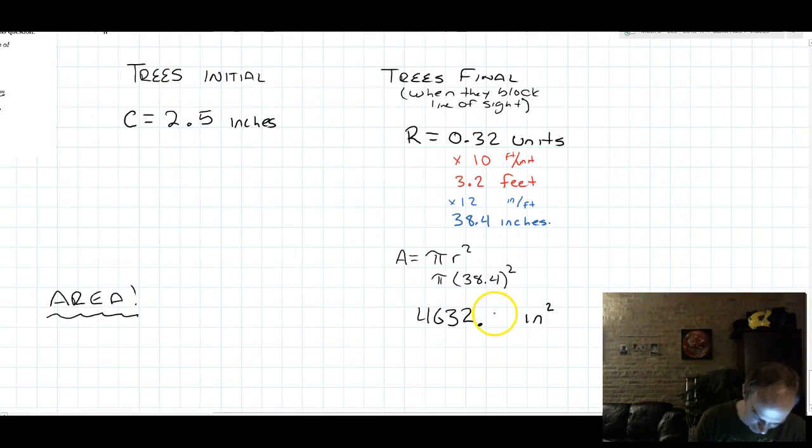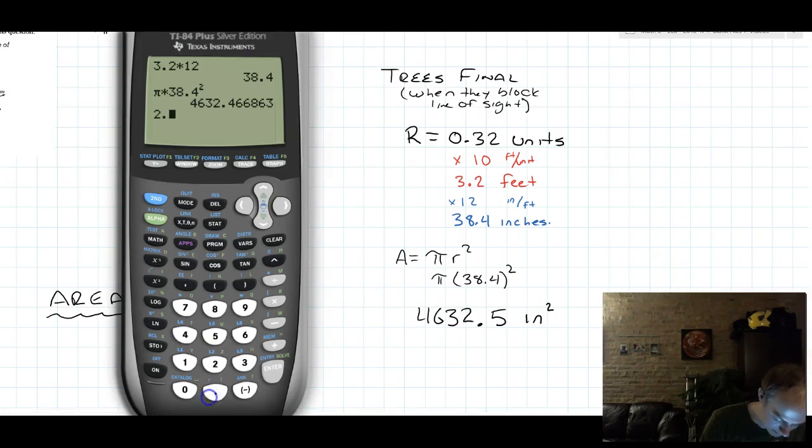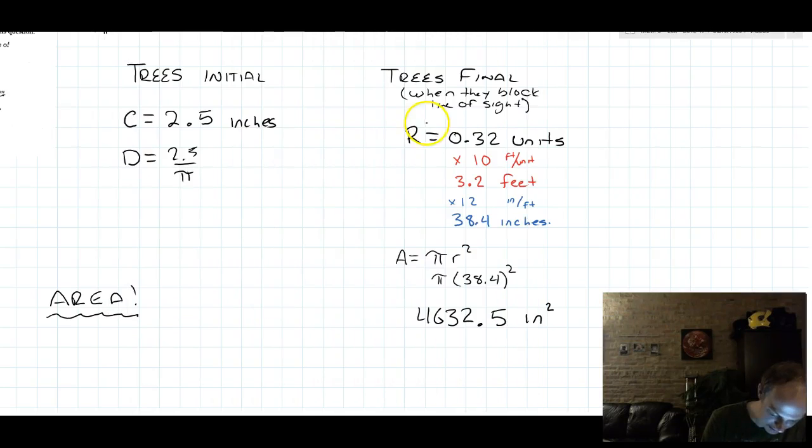4632.4 inches squared. Let's just round to 0.5. We'll round to 0.5. The initial trees had a circumference of 2.5 inches. From the circumference, the next thing to find is probably the diameter. You can do 2.5 divided by pi and get about 0.8.